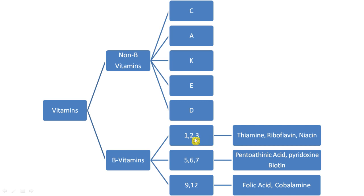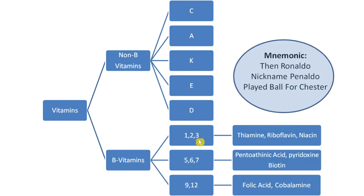There is an easy mnemonic to remember the names of each B vitamin: 'Then Ronaldo Nicknamed Pinaldo Played Ball For Chester.' So: B1 is Thiamine, B2 is Riboflavin, B3 is Niacin, B5 is Pantothenic acid, B6 is Pyridoxine, B7 is Biotin, B9 is Folic acid, and B12 is Cobalamin.